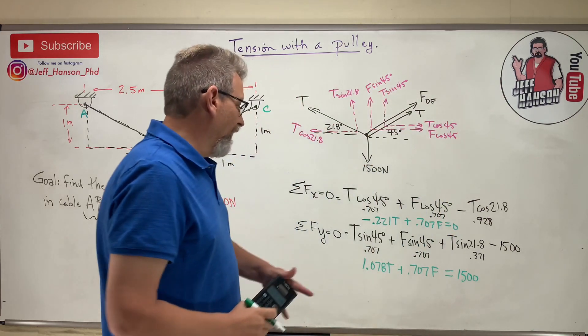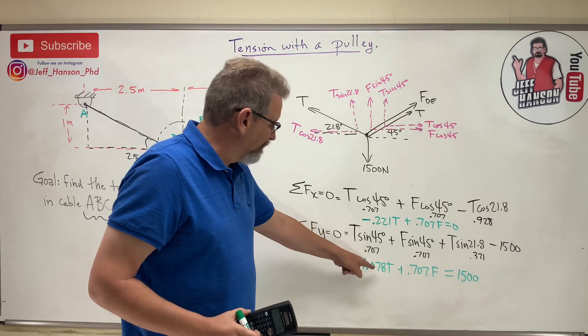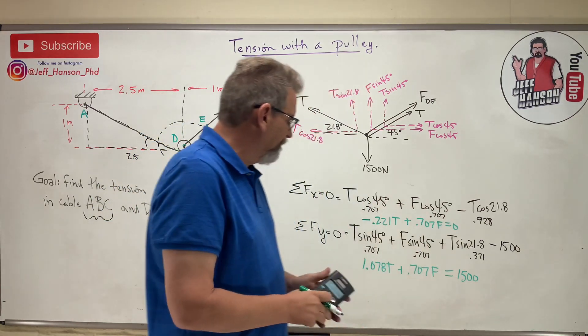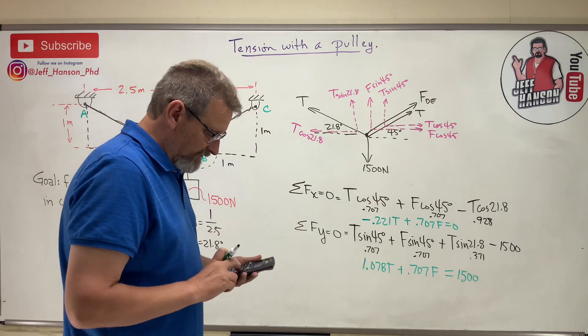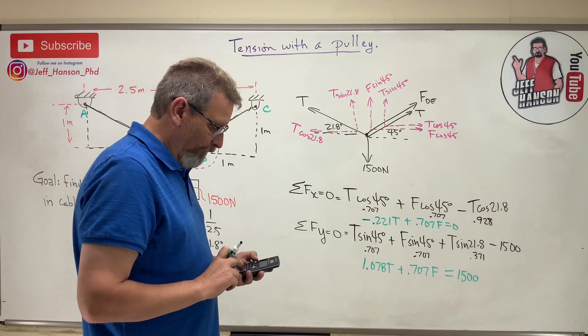And look what I have now: I have two beautiful equations. The T's are in line, the F's are in line, the constants are in line. Dude, I can use my system solver. Watch this - this is no problem.